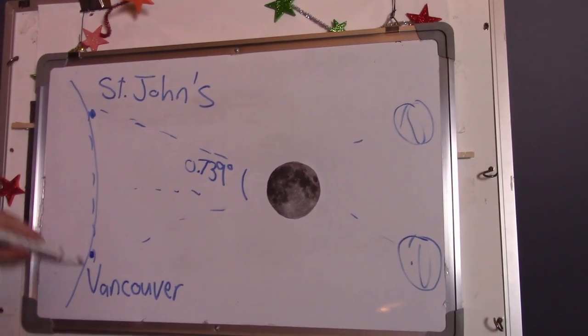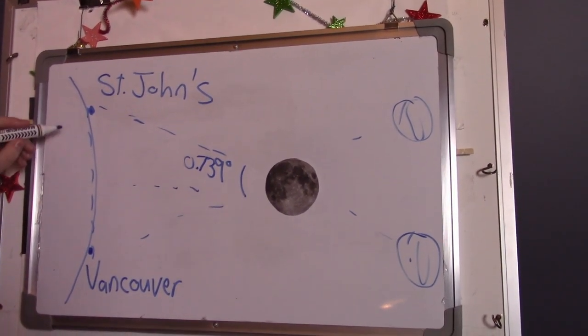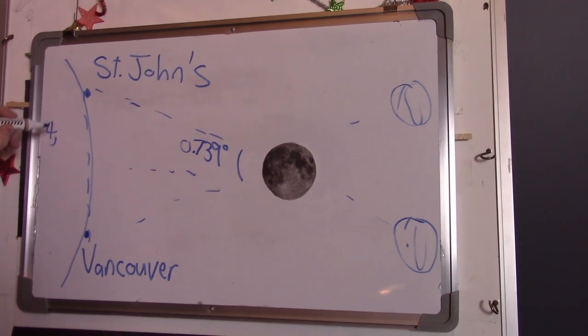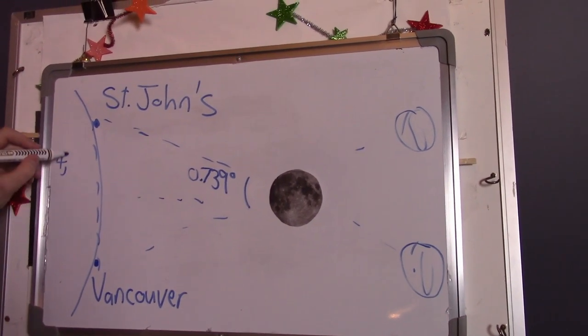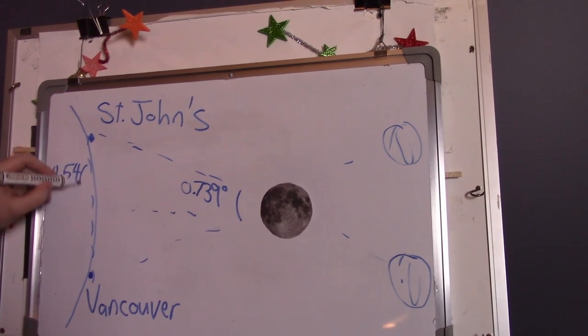And the distance between Vancouver and St. John's is 4,546 kilometers.